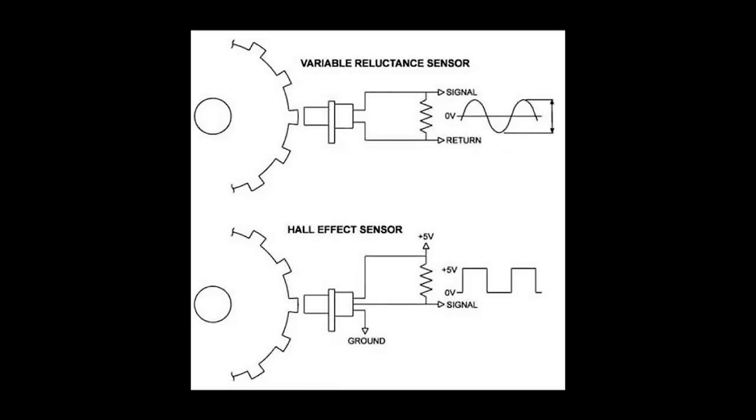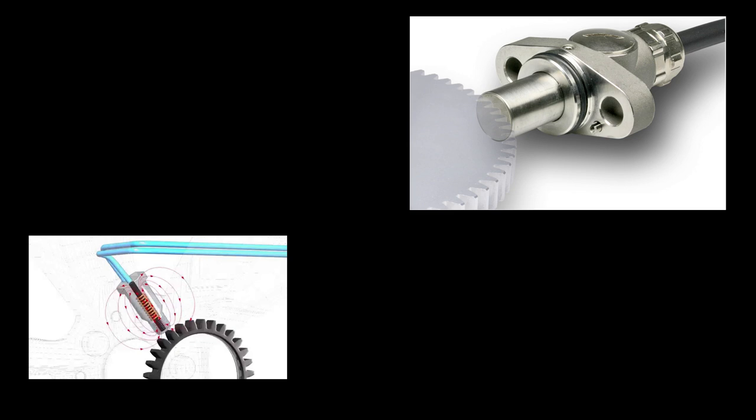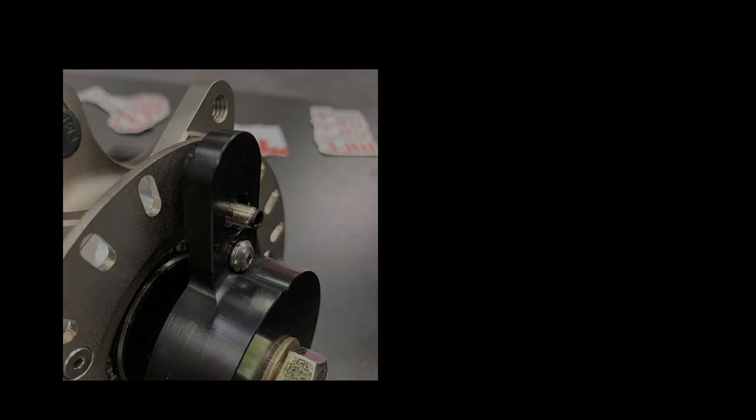Hall effect sensors usually have 3 leads and should not be mistaken for reluctance sensors which normally have 2 leads instead of 3. Reluctors do not require a magnet to sense, just a ferrous material which is why they're often used for crank and cam positioning and gear position sensors and wheel speed sensors on your vehicles.